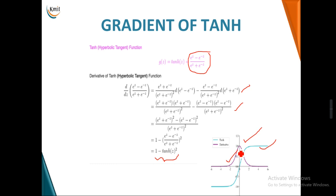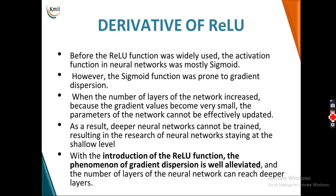Moving on to the ReLU function, it's important to understand its significance. Before ReLU was widely used, the most common activation function was sigmoid. However, sigmoid was very prone to a phenomenon called gradient dispersion. In a deep neural network with many layers, during back propagation with gradient descent, the gradient can become very small.